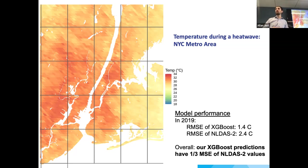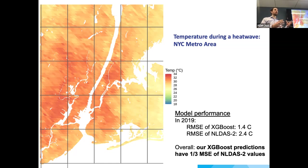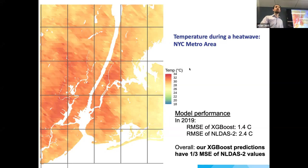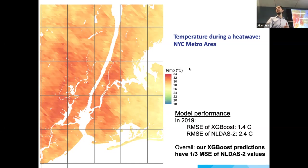Daniel showed in his paper that we were able to get much better predictive accuracy. Using root mean squared error as our metric, we achieved about a third of the mean squared error of NLDAS2. The finer spatial resolution also has implications for being able to drill down on the neighborhoods where people live.